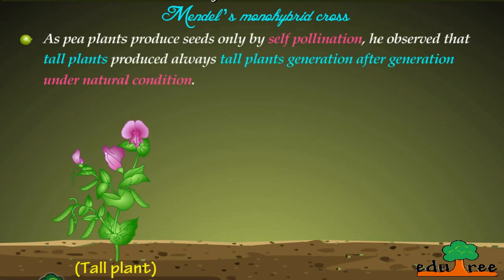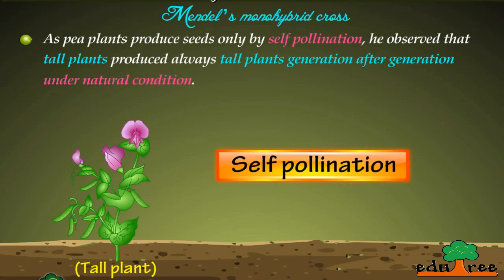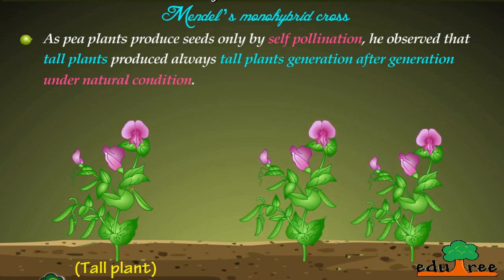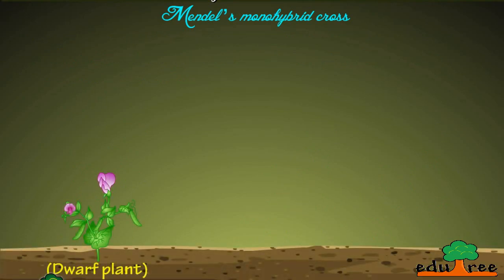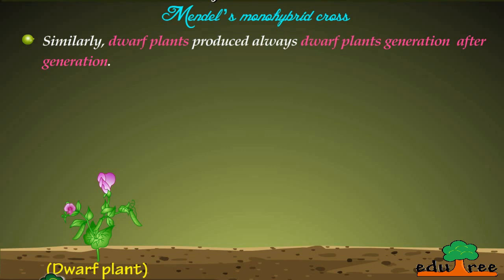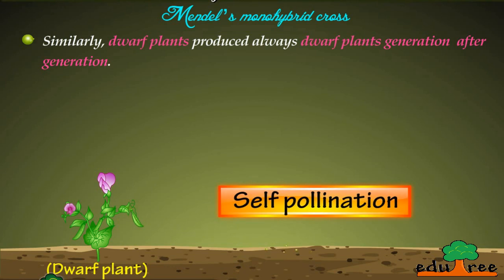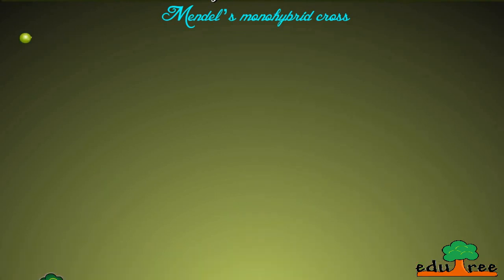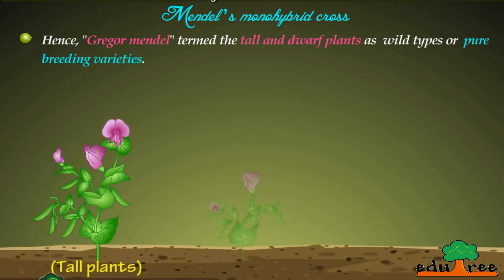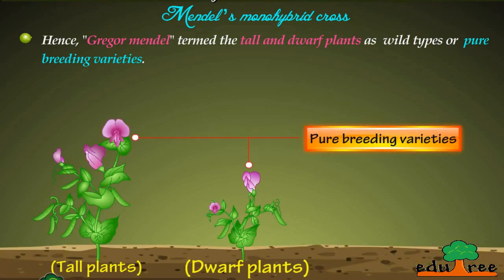As pea plants produce seeds only by self-pollination, Mendel observed that tall plants always produced tall plants, generation after generation under natural conditions, as shown here. Similarly, dwarf plants always produced dwarf plants, generation after generation, through self-pollination. Hence, Gregor Mendel termed the tall and dwarf plants as wild types, or pure breeding varieties.